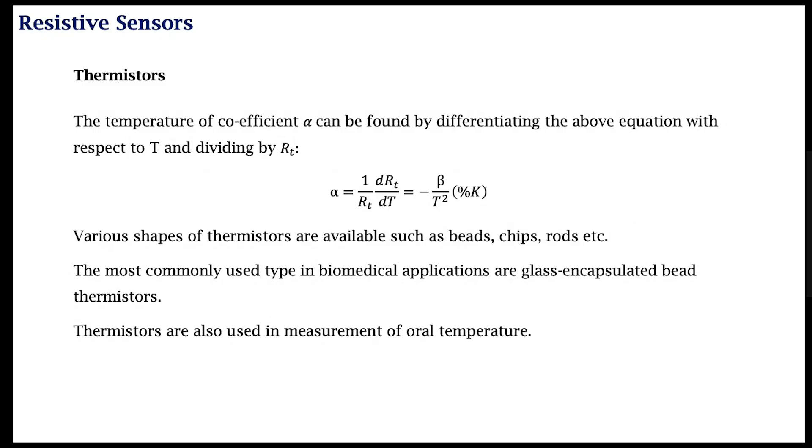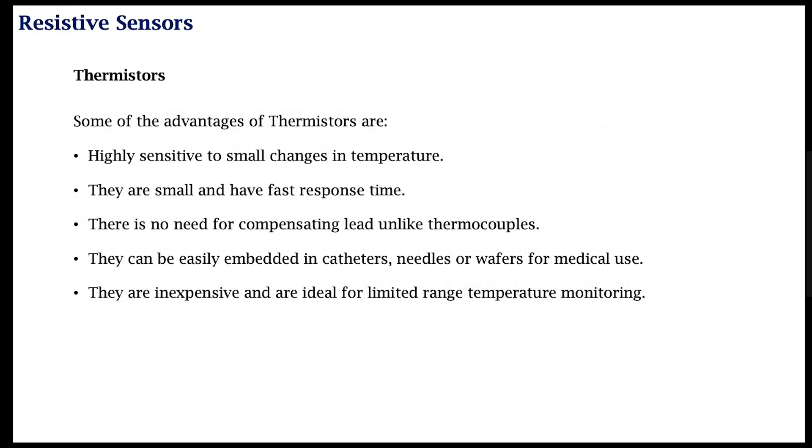Likely, but not always, what is likely there in the digital oral thermometer is a thermistor. What are some advantages? They are usually highly sensitive to relatively small changes in temperature, and usually we are interested in measuring within a small range of temperature. They are relatively small and quite fast in responding. In a thermocouple, you usually need to have a compensation circuit because you are using a reference temperature.